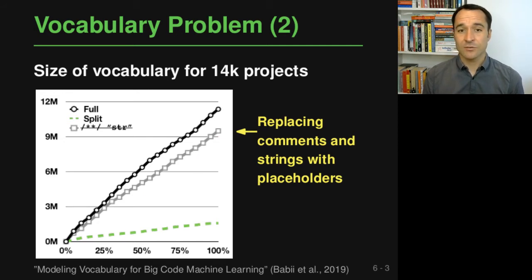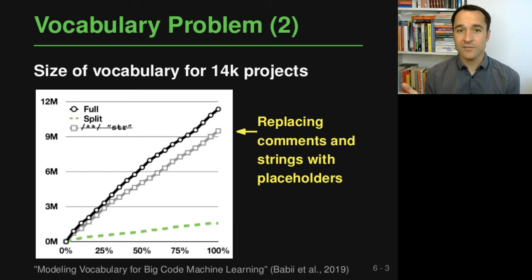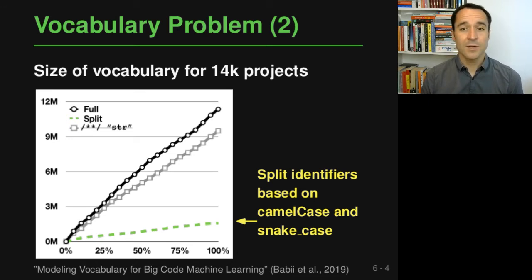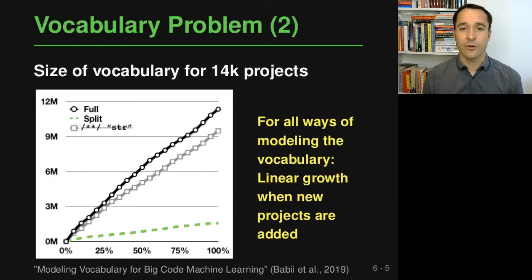Another possible approach is to actually split tokens — instead of considering all identifier names as they are, you split them based on the usual conventions used to compose identifier names, which are camel case and snake case. If you do this, the total size of the vocabulary reduces quite a bit. But what you should also see in this plot is that no matter how you model the vocabulary — whether you omit some tokens or split them into sub-tokens — there seems to be a linear growth in the number of tokens in the vocabulary when you add more projects, and this linear growth doesn't really seem to saturate anywhere, even up to 14,000 projects. This is the essence of the vocabulary problem.